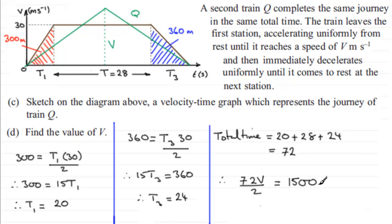So if I times now both sides by 2, I get 72V equals 3,000. And then to get V, I just need to divide that 3,000 by 72. And that turns out to be 125 over 3.